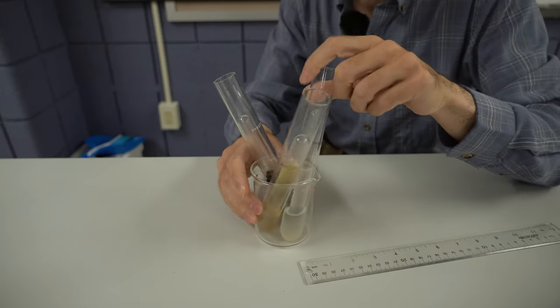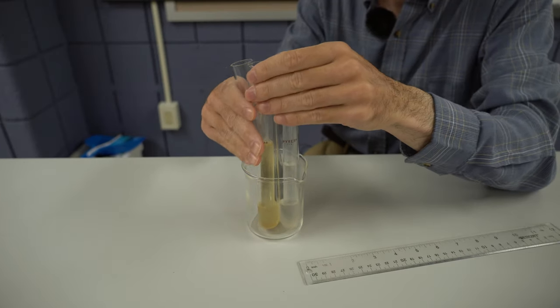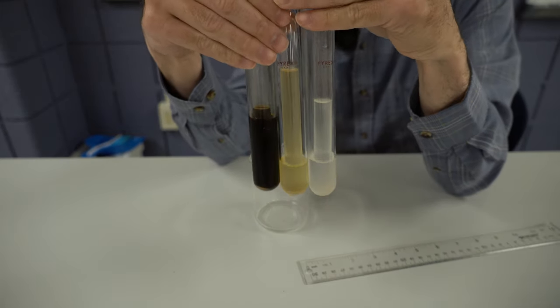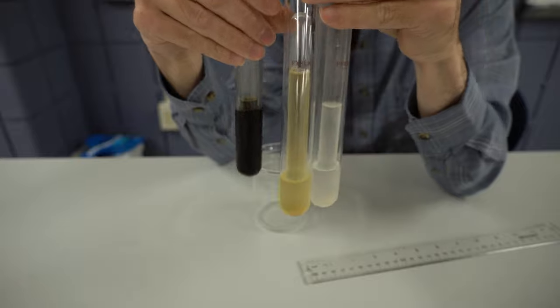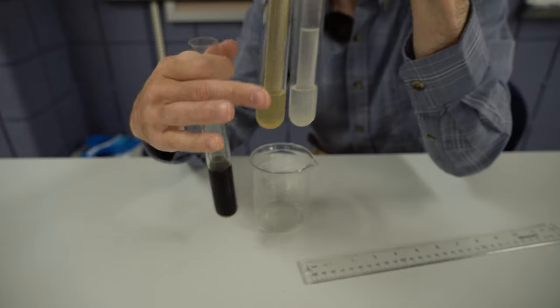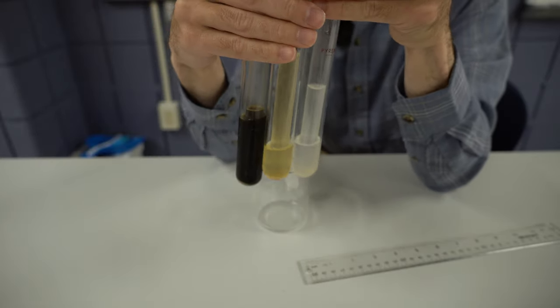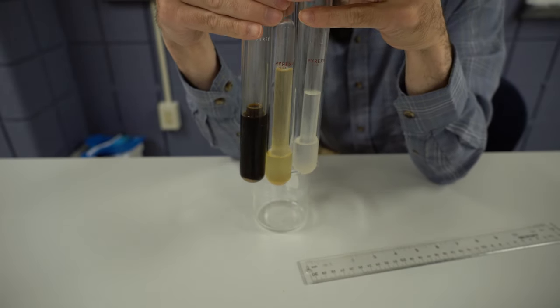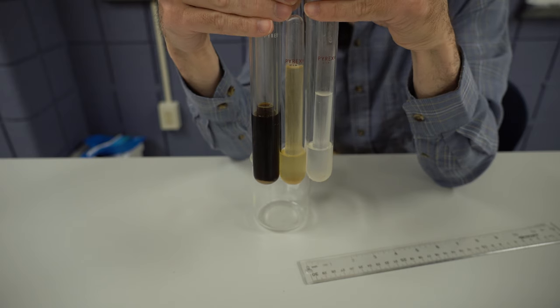So now we've given our yeast some time to grow, and there are various sugar solutions. And we can see there's varying degrees of happiness going on. We have the molasses, we have the honey, and we have the refined sugar, which is the clear one. And we can see that there is a difference between the amount of carbon dioxide gas produced, the amount of bubbles.